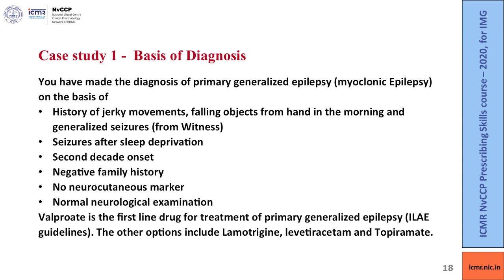Based on history, clinical examination and investigations, we make a diagnosis of primary generalized epilepsy with myoclonic epilepsy. The basis is history of jerky movements, falling objects from hand in the morning, witnessed generalized seizures, seizures occurring after sleep deprivation, patient in second decade of life, and a negative family history.